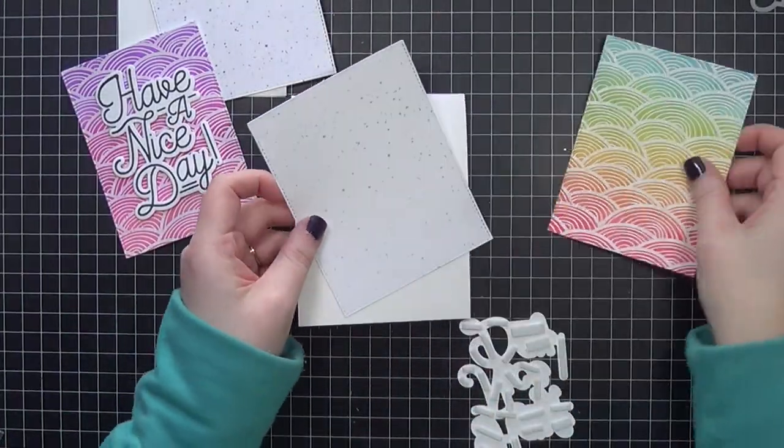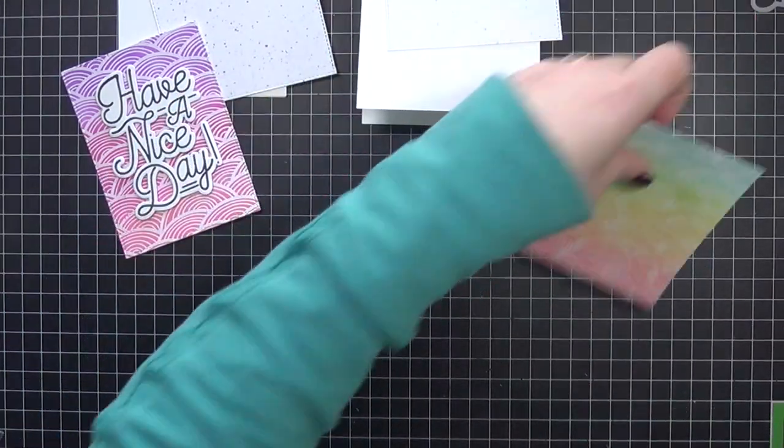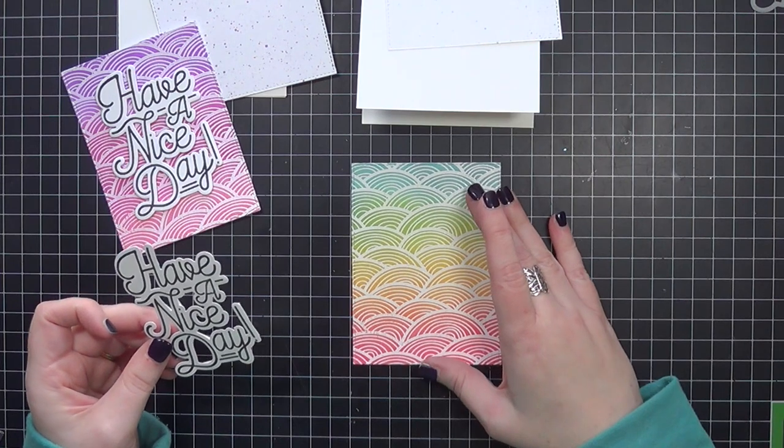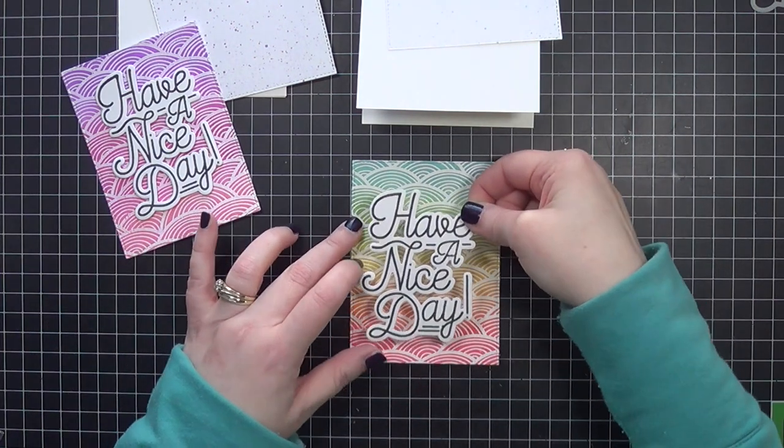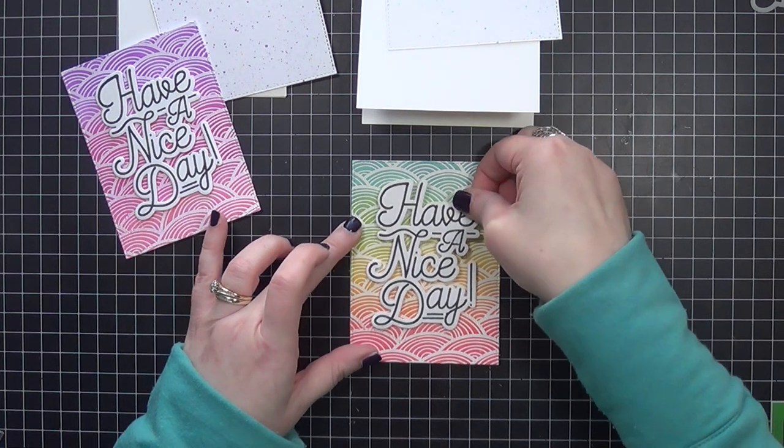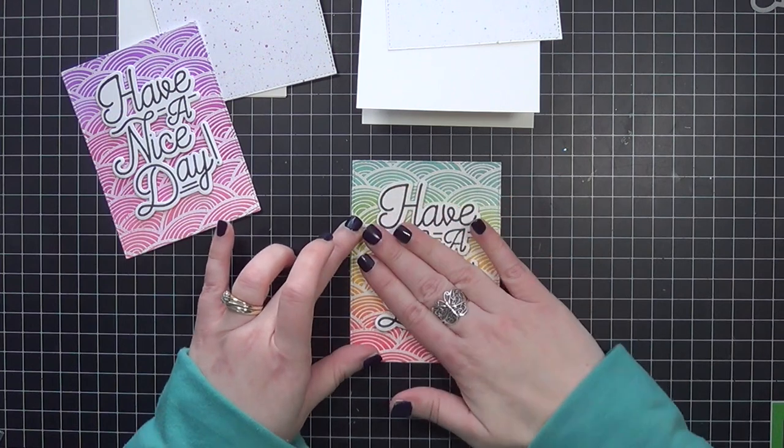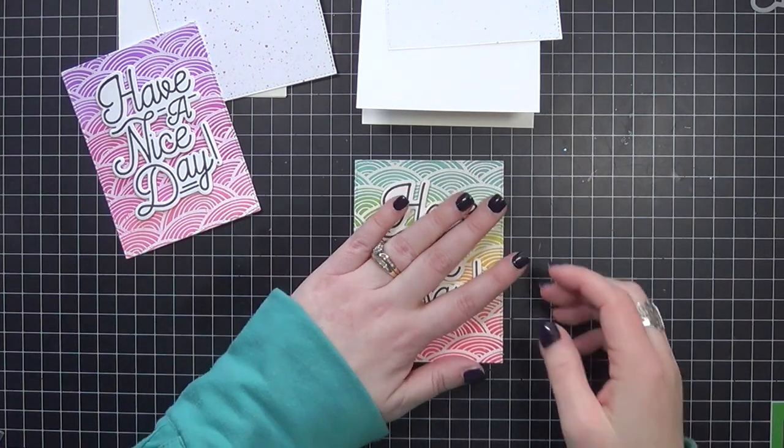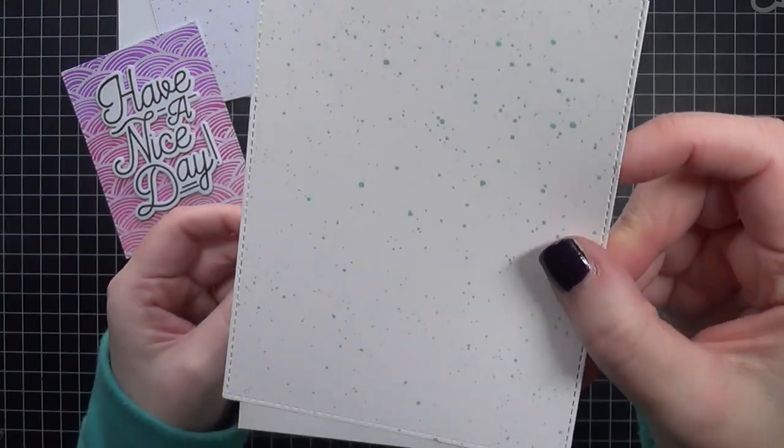I want to go ahead and cut down pieces of pattern paper as well. This is the Spiffy Speckles pattern paper from Lawn Fawn, and I thought that would be nice to have that kind of spattered look in the background of these ink blended backgrounds. So now I'm going to go ahead and place my sentiments onto my main panels and I just love the dimension of popping these up.